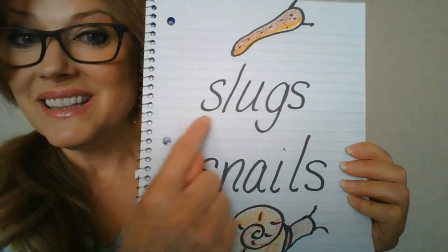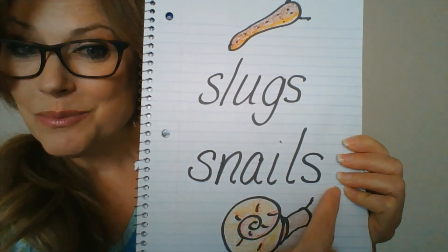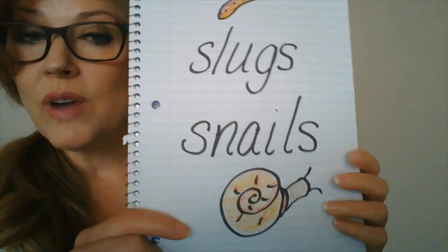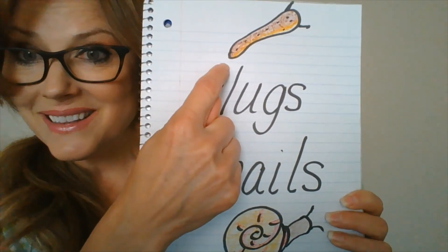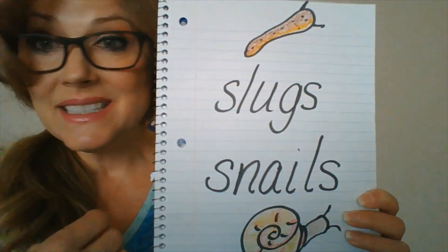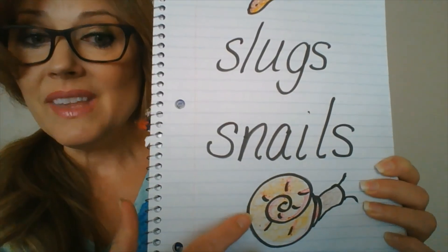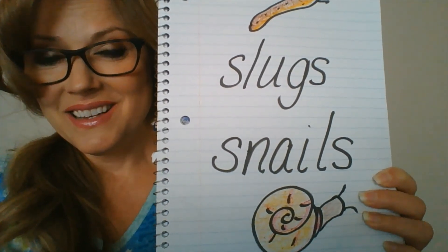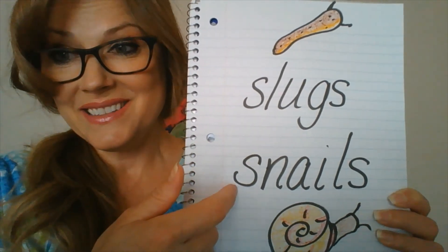We're going to conclude our lesson by writing the words 'Slugs' and 'Snails.' What letter does slugs begin with? S. What letter does snails begin with? S. That's right. I want you to write those two words on a piece of paper and try to draw a slug. Remember, it only has one body — it does not have a head, a thorax, or an abdomen. And here is a snail. Snails live inside shells. Y'all have a great day. And remember, these are not insects.